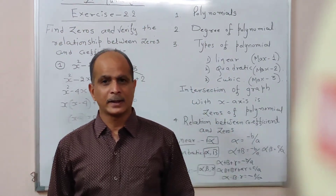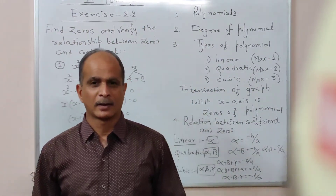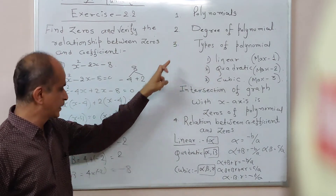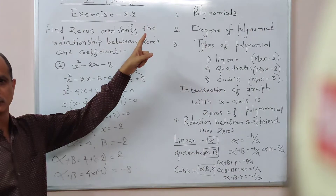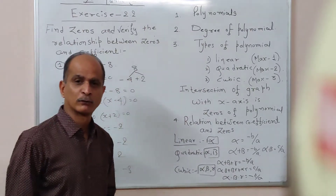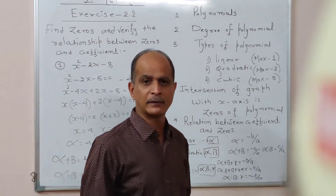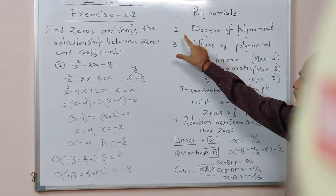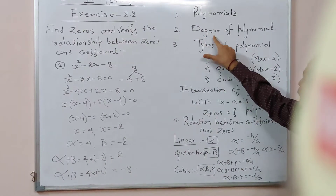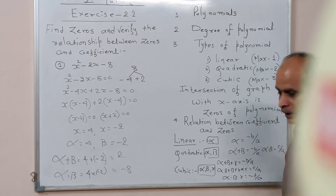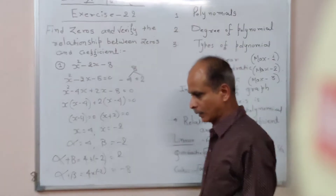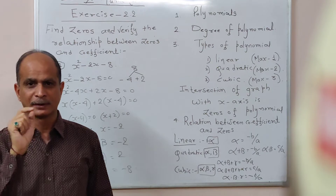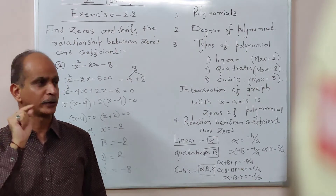Yesterday we discussed different four points of chapter number two, polynomial. First of all, we discussed what is a polynomial. Then we also discussed how to find out the degree of a polynomial. The highest power of the variable is known as the degree of the polynomial.